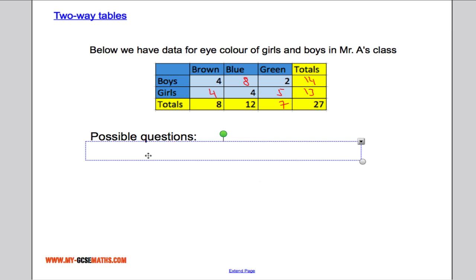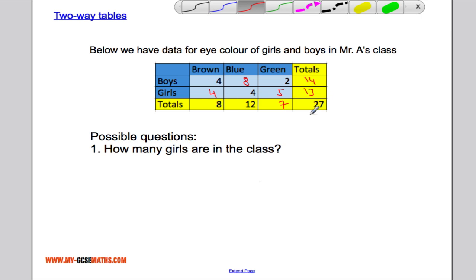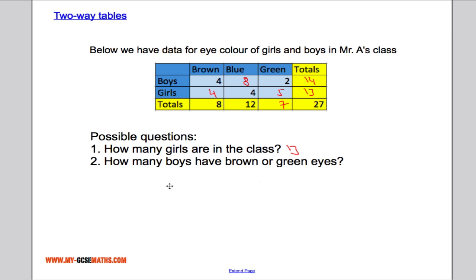Now let's see some possible questions. How many girls are there in the class? Well, we've already worked that out. There are 13 girls in the class. How many boys have brown or green eyes? So we've got four boys with brown eyes, two boys with green eyes. That's six in total. So six have brown or green.